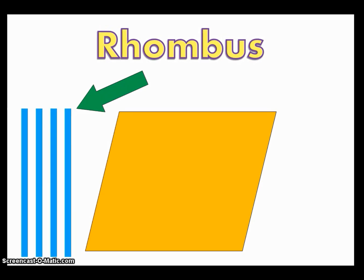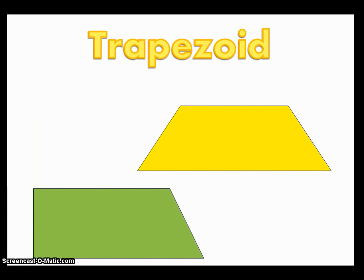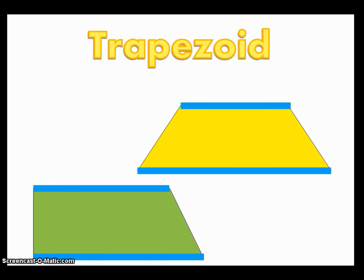And our last quadrilateral for today is called a trapezoid. Now trapezoids can come in many different forms that look kind of different from each other, but they're all still trapezoids. The main thing is that they just have one set of parallel sides, only one. The other side is not parallel.